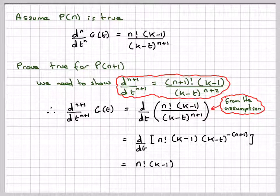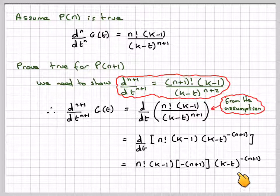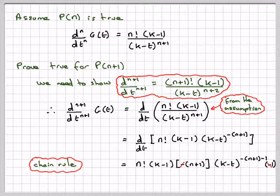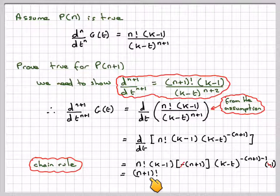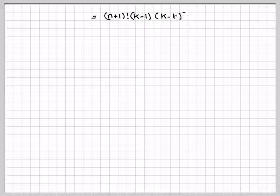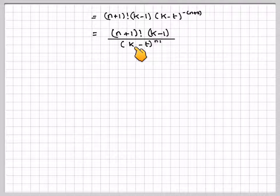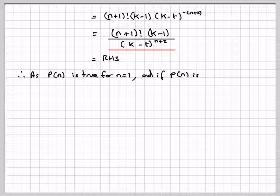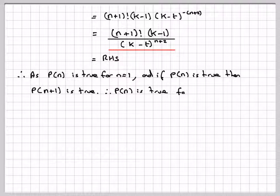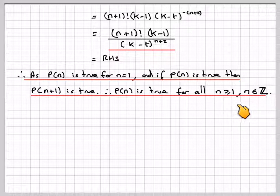Differentiating n factorial times (k-1) times (k-t) to the minus (n+1) using the chain rule: the power -(n+1) comes down, giving minus (n+1) times n factorial times (k-1) times (k-t) to the minus (n+2), then multiply by the derivative of the bracket which is minus 1. The minus signs cancel, and n factorial times (n+1) equals (n+1) factorial, leaving (n+1) factorial times (k-1) over (k-t) to the n plus 2 — the required result. Since P(1) is true and P(n) true implies P(n+1) true, P(n) holds for all integers n ≥ 1.